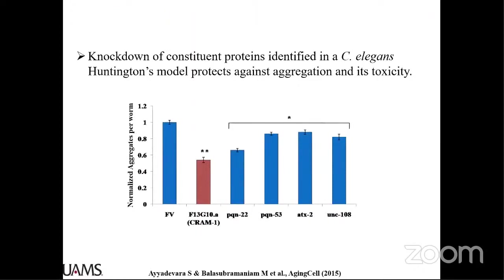Using C. elegans it is very simple to perform knockdowns and directly assess functional roles. We knocked down many of these proteins and could see protection — less aggregate formation. One particular protein, which we named CRAM1 because it was previously undiscovered, showed that when knocked down in multiple model systems — whether Huntington's, Alzheimer's, or Parkinson's — there was protection against aggregation. This clearly indicates that CRAM1 plays a leveraged role in aggregate progression.